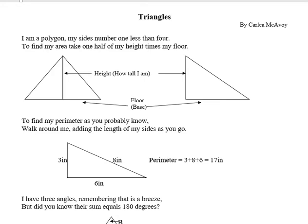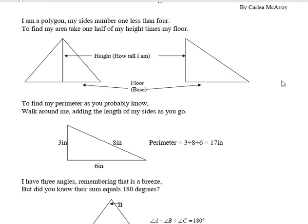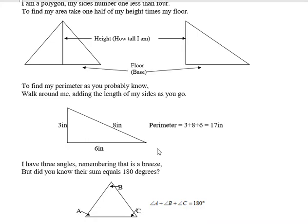I am a polygon, my sides number one less than four. To find my area, take one-half my height times my floor. To find my perimeter, as you already know, walk around me adding the length of my sides as you go.